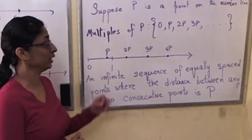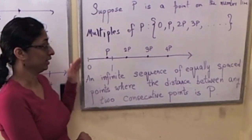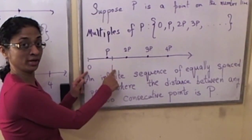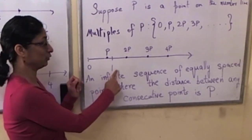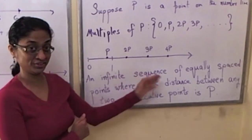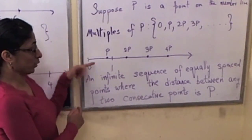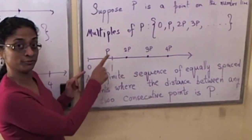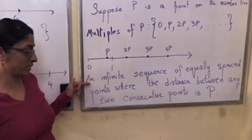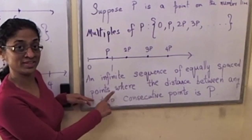Let's start by quickly reviewing multiples of p. Suppose p is a point on the number line. Here's my number line where I have marked off only 0 and the point 1. And the minute we mark off 1, the whole number line is determined whether or not I actually take the time to put 2, 3, 4, and so on. So p is a point on the number line, p is a number. And by multiples of p, we mean a very specific infinite sequence of equally spaced points where the distance between any two consecutive points is exactly p.